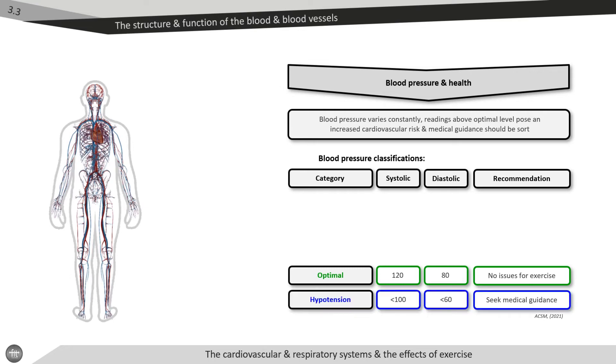Readings lower than this may have clinical significance but are not necessarily associated with increased cardiovascular disease. This is termed as hypotensive, and hypotensive individuals may wish to seek GP guidance. Readings above an optimum level do pose an increased cardiovascular risk, with readings above 140 systolic and 90 diastolic being classed as stage one hypertensive.